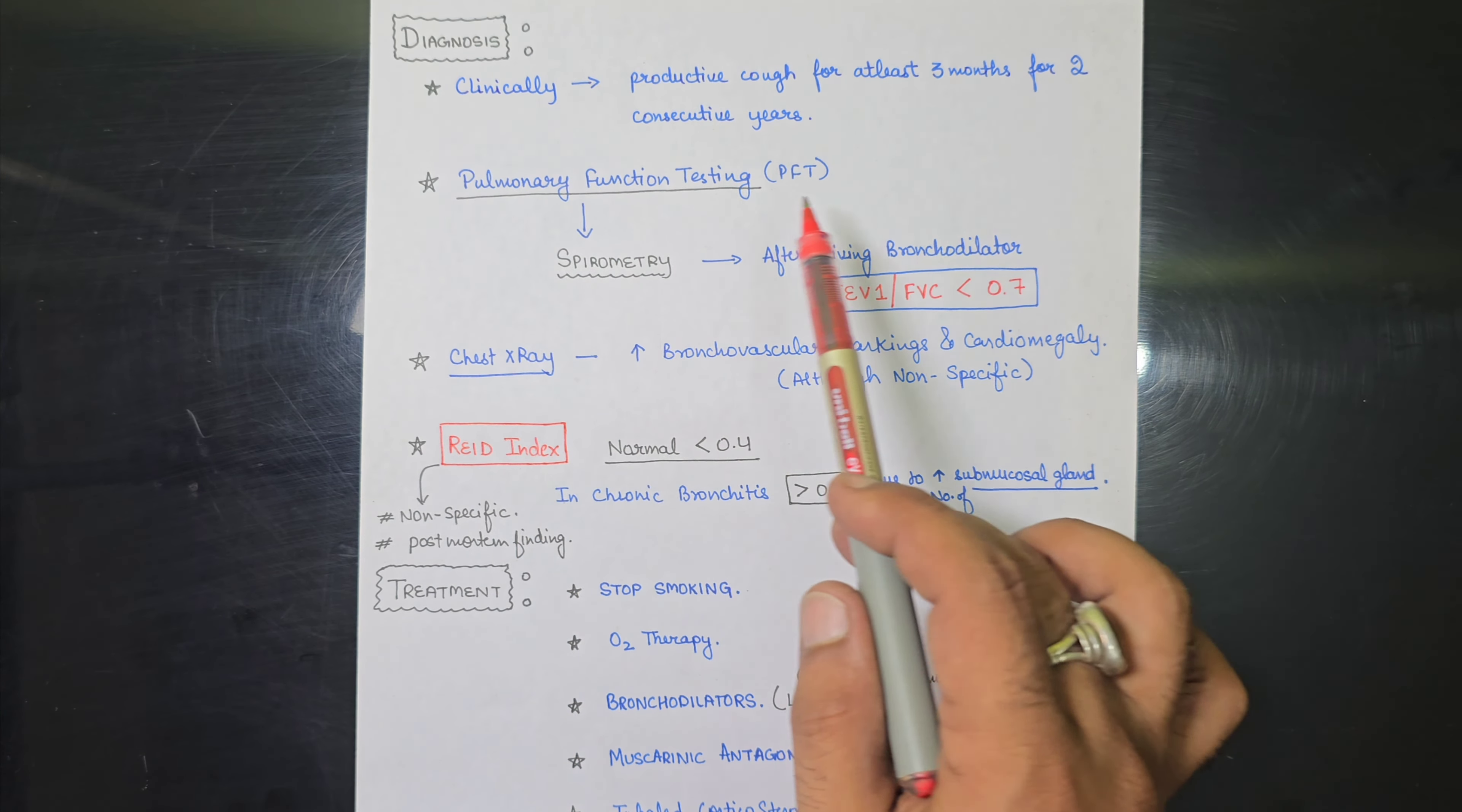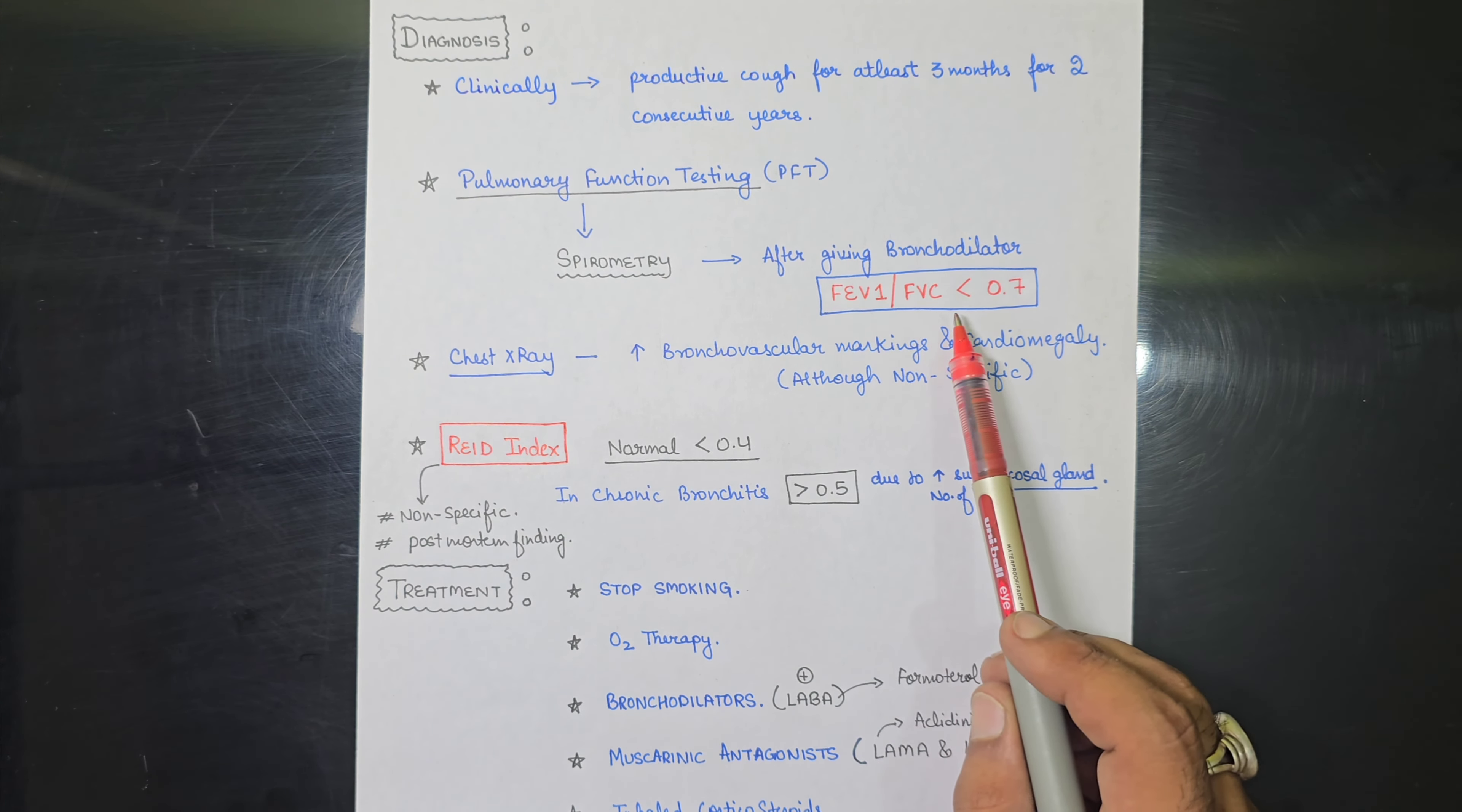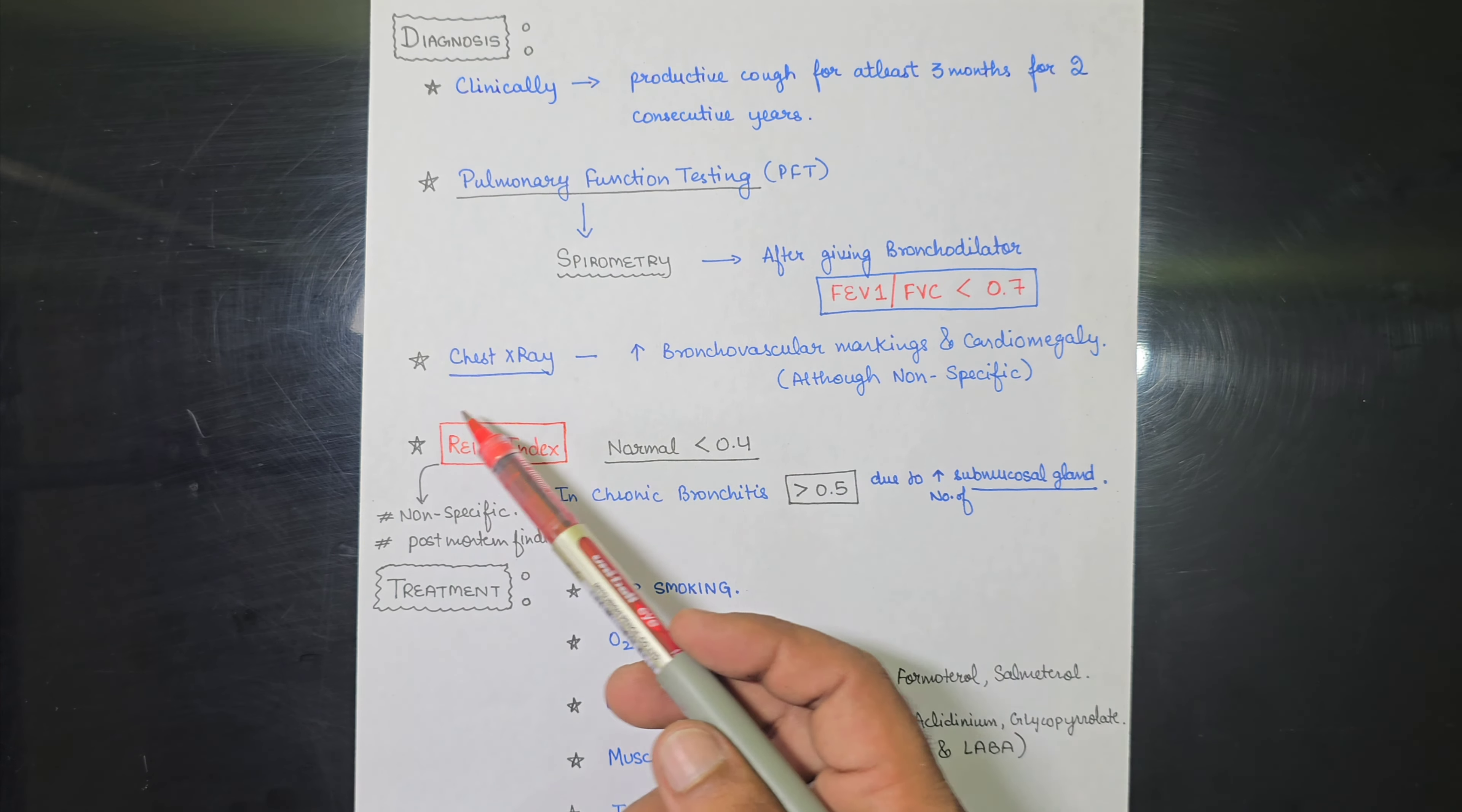And after clinical assumption, you can also go for pulmonary function testing, which the gold standard is spirometry. And in spirometry, after giving bronchodilators, it is a test which is done after giving bronchodilators, we will see in the spirometry the FEV1 to FVC ratio. If it is less than 0.7, then it is a confirmatory test for chronic bronchitis. And this FEV1 to FVC ratio, it will mainly tell us that how much lung or how much bronchioles are functioning in that particular patient.